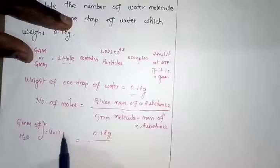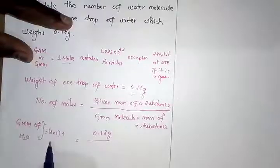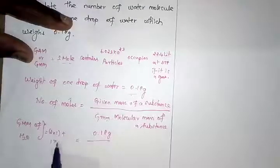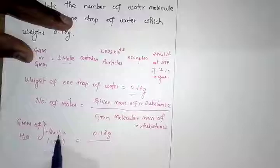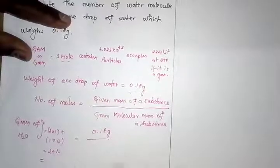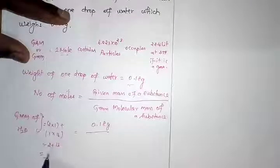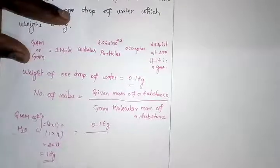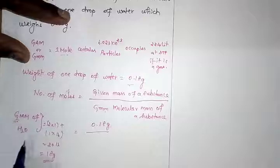Plus how many oxygen we have? 1 × atomic mass of oxygen is 16. So 2 × 1 = 2, plus 1 × 16 = 16. The answer is exactly 18 grams because it is expressed in grams.